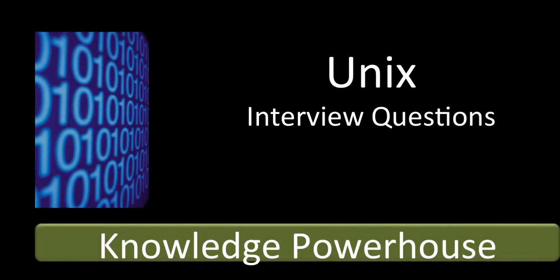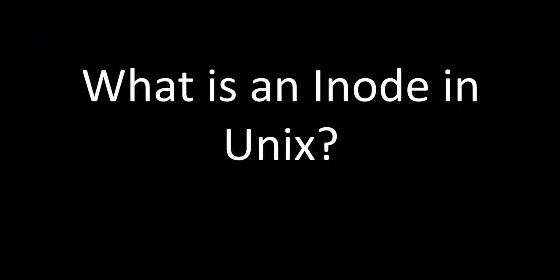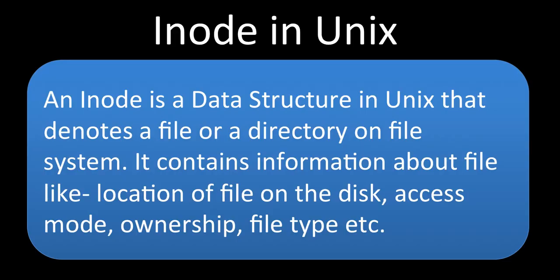Hello friends, welcome to UNIX interview question series from Knowledge Power House. Let's go on to the next set of questions. What is an inode in UNIX? An inode is not a term that we use in shell scripting, but it's a basic concept about the file system. An inode is a data structure in UNIX that denotes a file or a directory on the file system. Any file or directory has a corresponding inode, and some people also call it an information node.